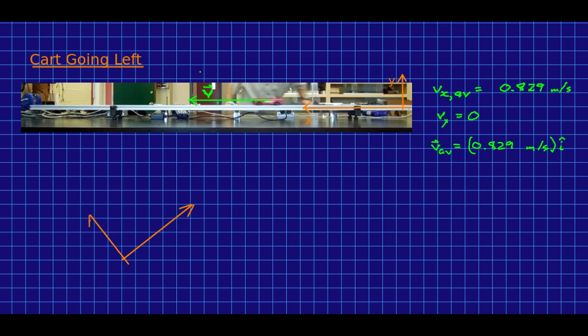We could, if we wished, work with a set of axes like this. And now, if the velocity was still this way, now our velocity would have a positive x component and a negative y component.